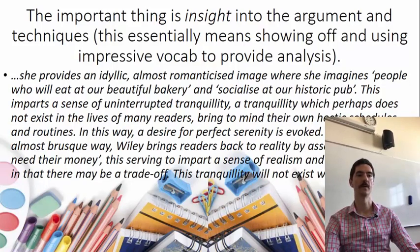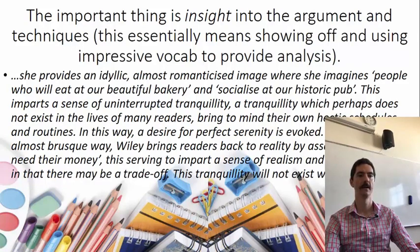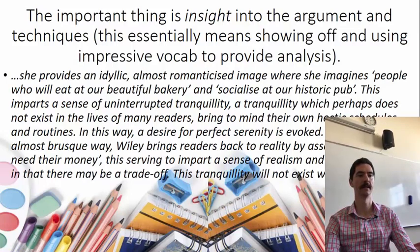The example provided shows: 'She provides an idyllic, almost romanticized image where she imagines people who will eat at our beautiful bakery and socialize at our historic pub. This imparts a sense of uninterrupted tranquility, a tranquility which perhaps does not exist in the life of many readers, bringing to mind their own hectic schedules and routines. In this way, a desire for perfect serenity is evoked. In a blunt and almost brusque way, Wiley brings readers back to reality by asserting that we need their money, serving to impart a sense of realism and perhaps urgency — this tranquility will not exist without this money.'